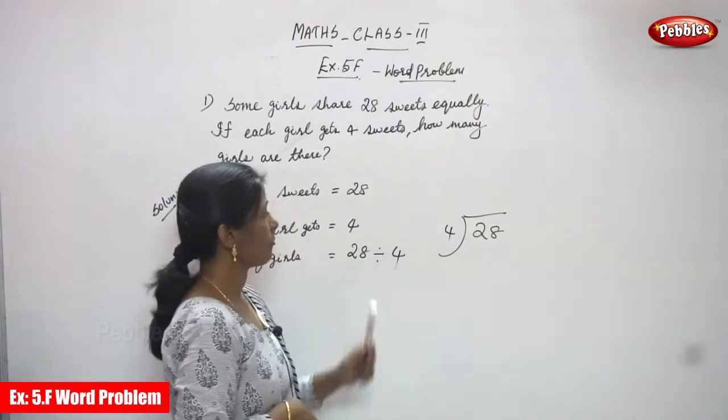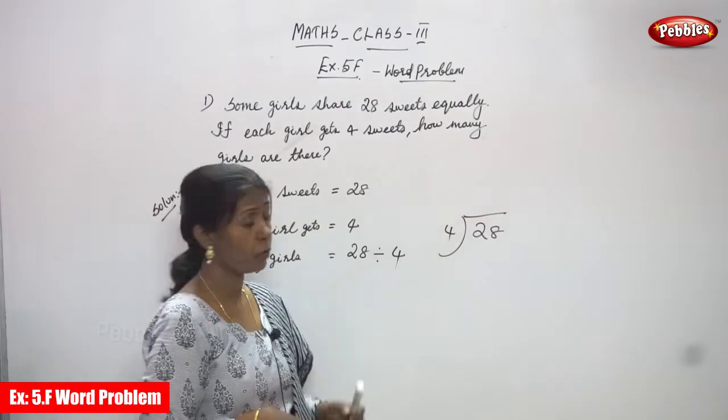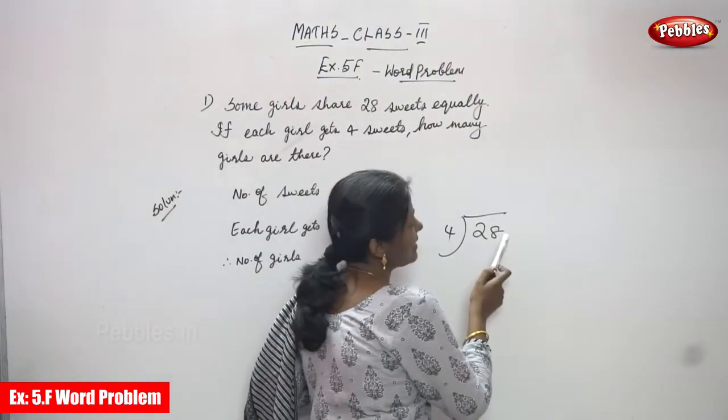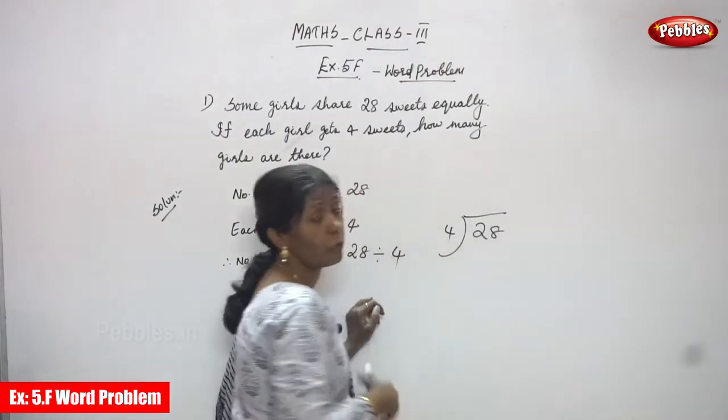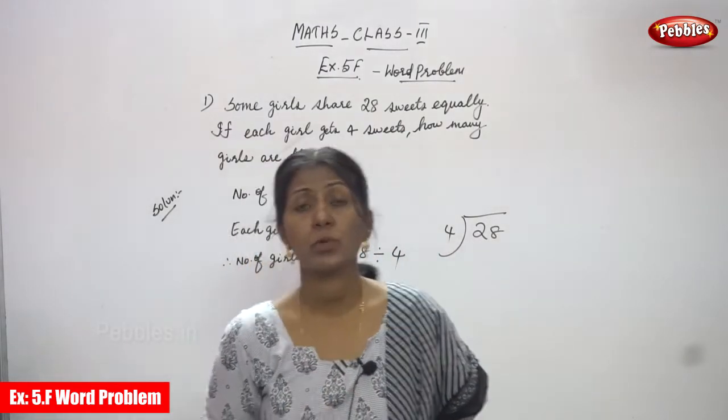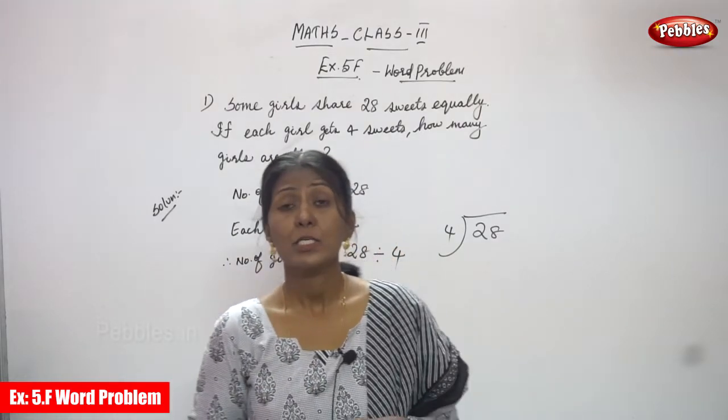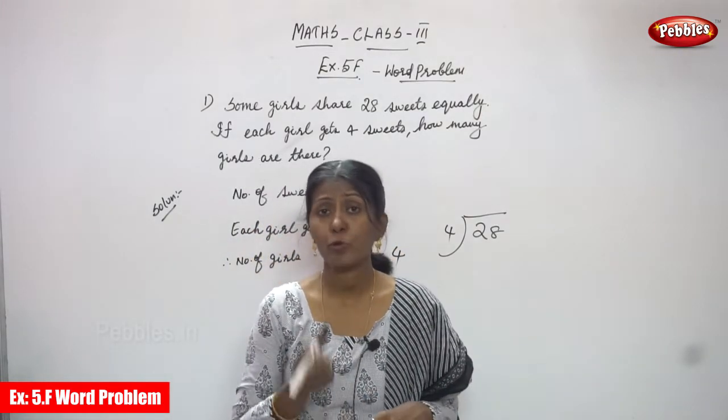Number of girls you have to find out, so 28 is divided by 4. 28 is the dividend and 4 is the divisor. You must use the fourth table. So 4 ones are 4, 4 twos are 8, 4 threes are 12, 4 fours are 16, 4 fives are 20, 4 sixes are 24, and 4 sevens are 28.